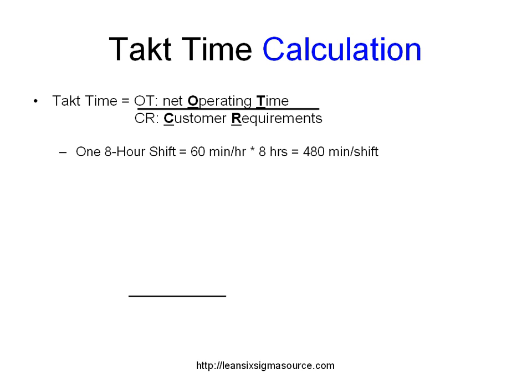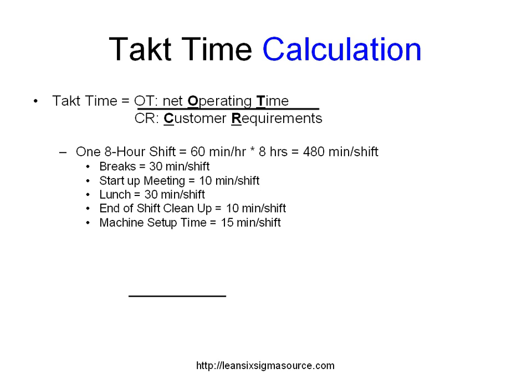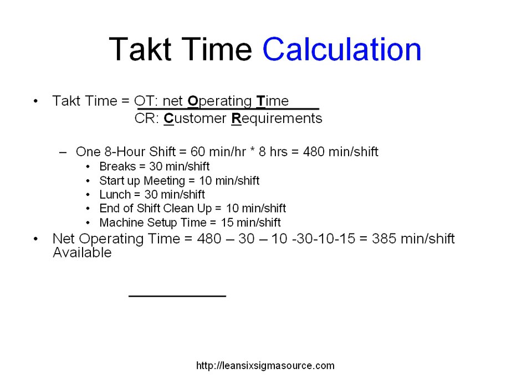For this example, we'll have just one eight-hour shift, giving us 480 minutes of available time. Then we'll subtract out our unavailable time: two 15-minute breaks, a 10-minute startup meeting, 30 minutes for lunch, 10 minutes for end-of-shift cleanup, and 15 minutes for machine setup. That leaves us with 385 minutes available for that shift.